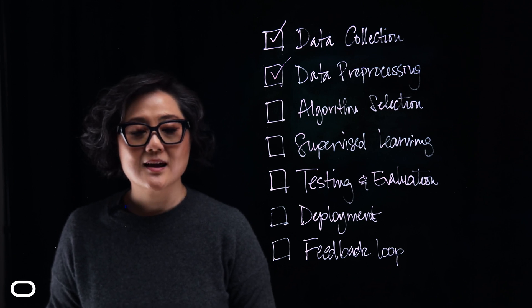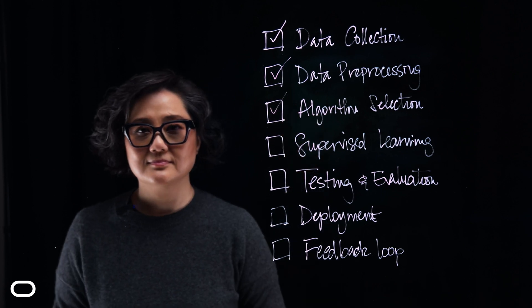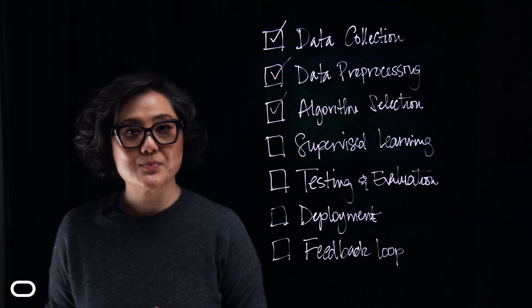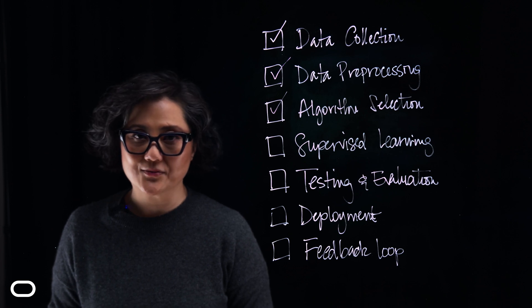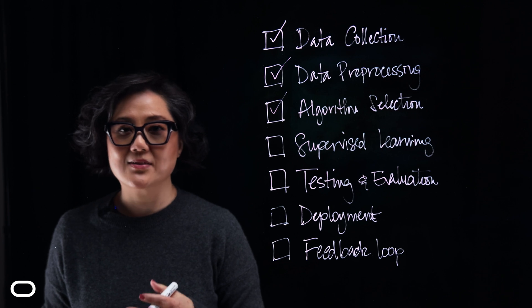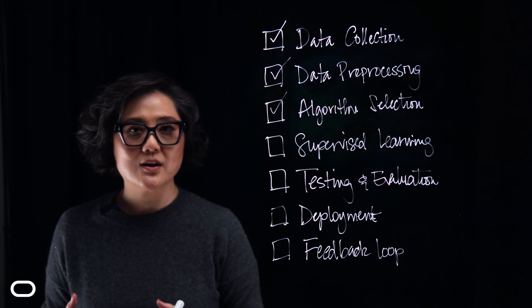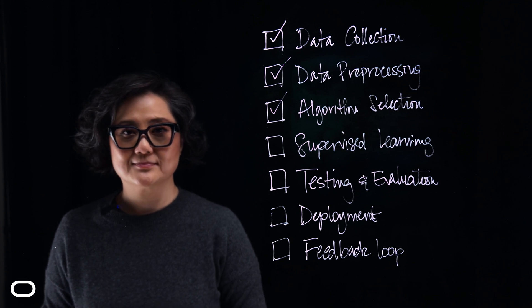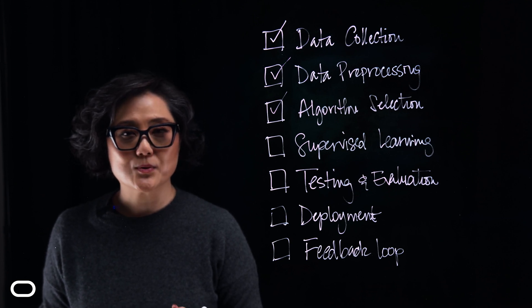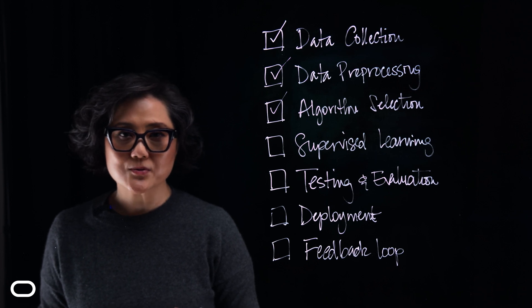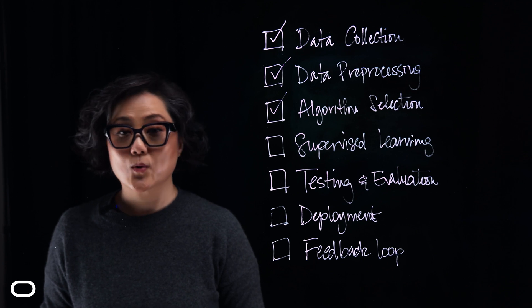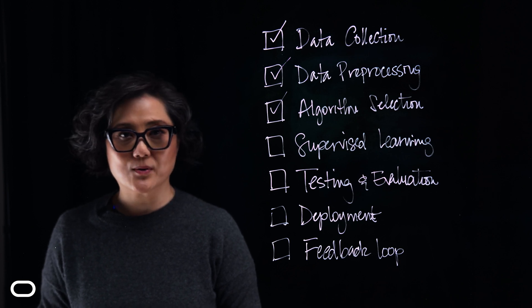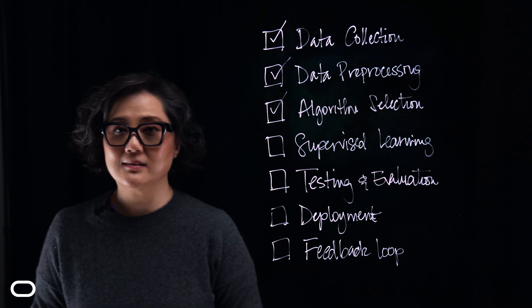After data preprocessing, there's algorithm selection. Different AI tasks require different algorithms, and it's important that you pick the right one for the problem you're trying to solve. Selections can be based on the time to train that model, the number of parameters or features, or even how accurate that model might be. For example, machine learning tasks might use algorithms like decision trees, neural networks, or support vector machines, but large language models like Claude require more computational power and memory, which may not be readily available.